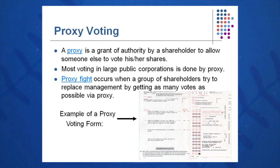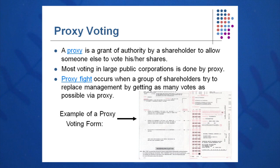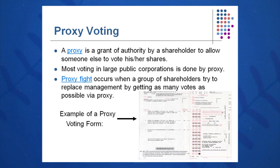Proxy voting is one way to put on a proxy fight. If you're unhappy with management, you can send in your votes via proxy — using the proxy form shown here. It's basically like a Scantron — a granting of authority to vote your shares, allowing someone else to vote on your behalf. For instance, I send my proxy votes into National Financial Services Company, a branch of Fidelity Investments, and they vote my shares for me. These days you can also go to proxyvote.com and enter a secret code to vote your shares online.